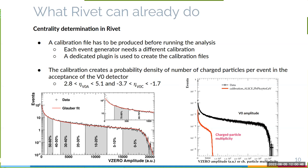On the right, the black points show the V0 amplitude and the red points show the charged particle multiplicity used by Rivet to determine centrality. There is a linear relationship between both, so using charged particle multiplicity it is possible to determine centrality in an analogous way to what the experiment does. A calibration file has to be produced, and this calibration file for centrality depends on the event generator, energy, and beam type.